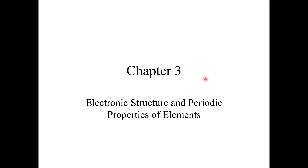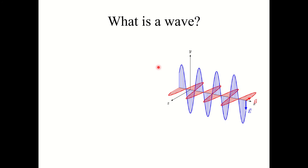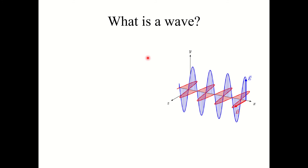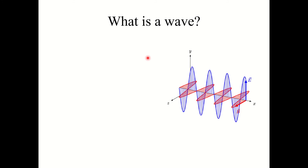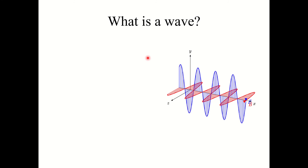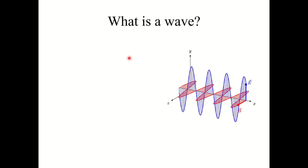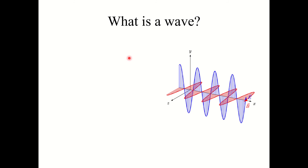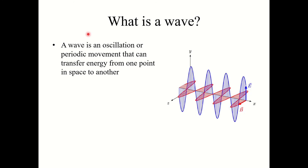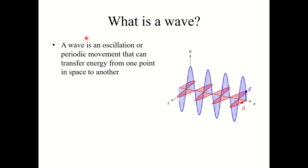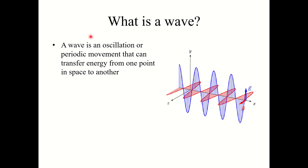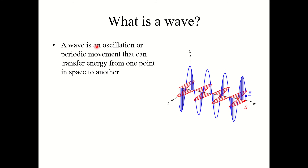Chapter 3: Electronic Structure and Periodic Properties of Elements. Let's first begin with a discussion about waves. So what is a wave? Everyone watching this is familiar with the concept of a wave, but I just want to describe it scientifically. We will define a wave as an oscillation or periodic movement that can transfer energy from one point in space to another.